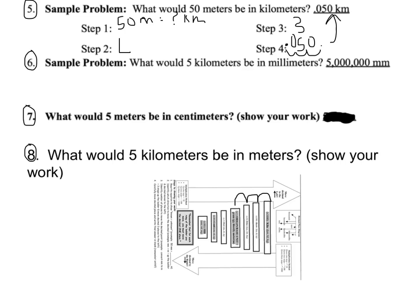Sample problem number six. We write the initial part, what we know. We know we have five kilometers. We want to know what that equals in millimeters. So the first thing we have to do is figure out which way we're going to move our decimal. We're moving down the ladder, so the decimal is going to move to the right.